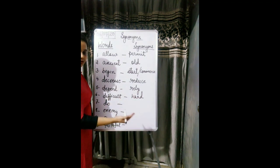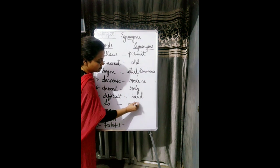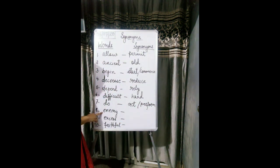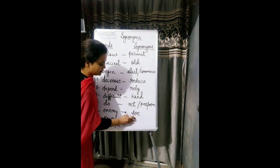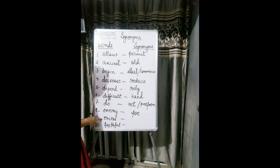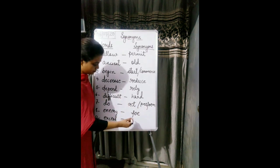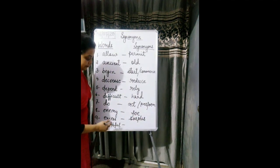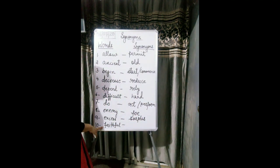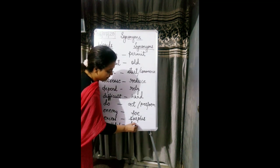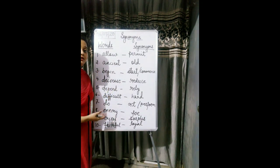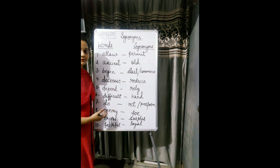Do means to act or to perform — you can also say act or perform. Then enemy — the synonym of enemy is foe. You can say foe or you can say enemy. Then excess means something which is too much, so the synonym is surplus. Then faithful — you can say loyal, L-O-Y-A-L. So here are some synonyms and you have to learn as many as you can. Let's see some more examples.